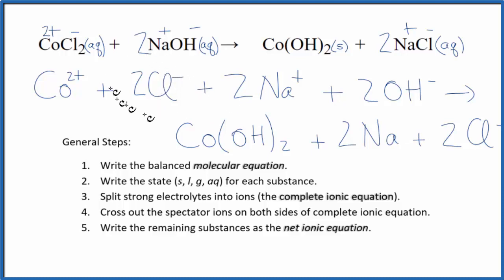I have two chloride ions in the reactants, two in the products. Let's cross those out. Two sodium ions. And then here again, we have these two sodium ions here. Cross them out.